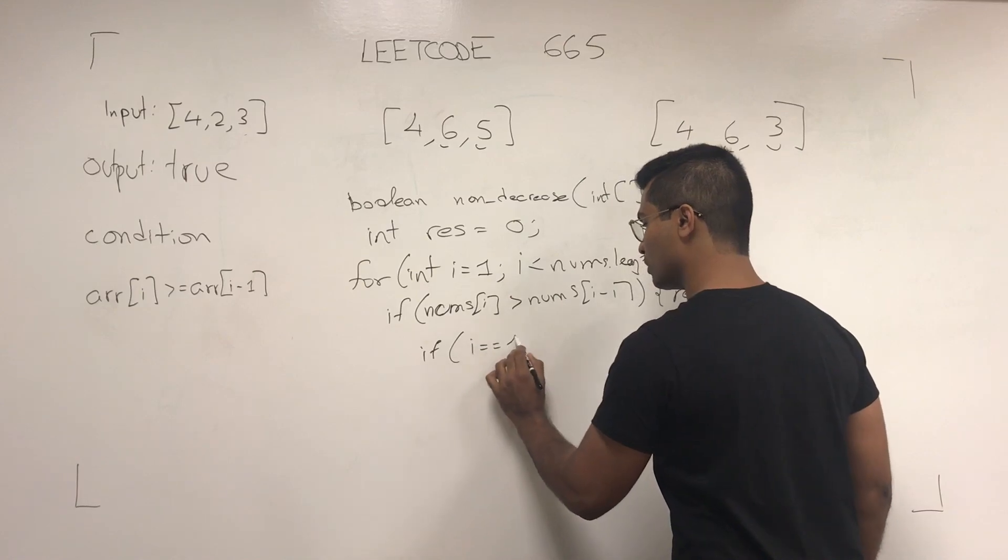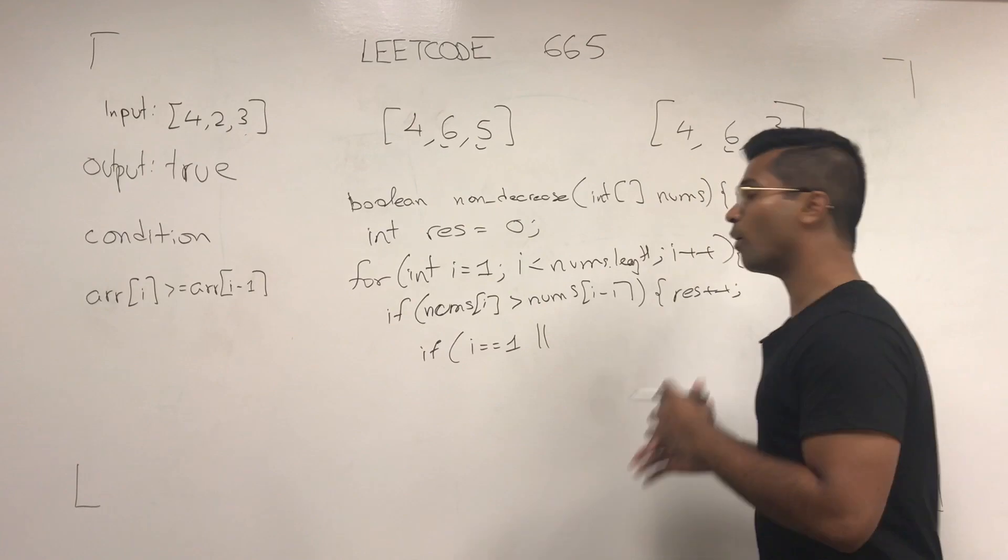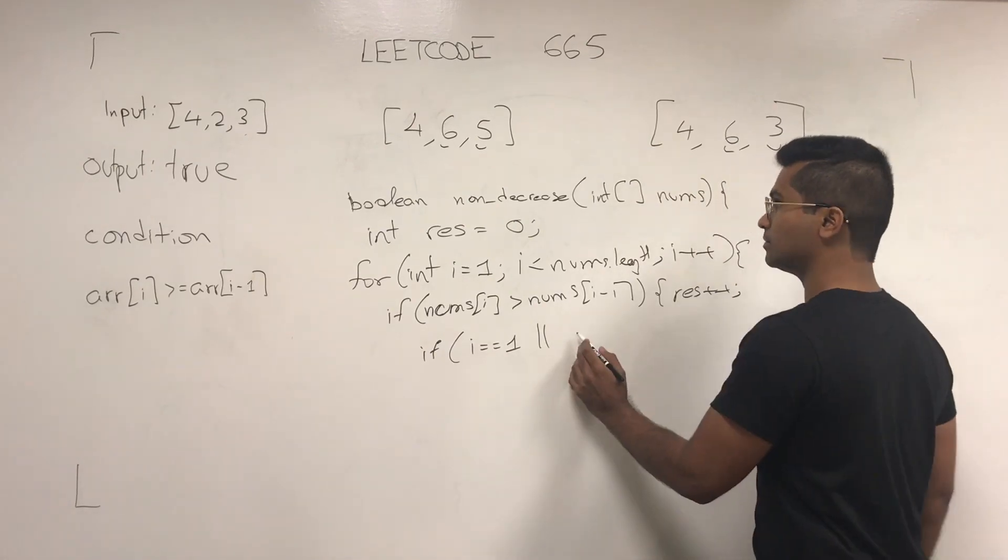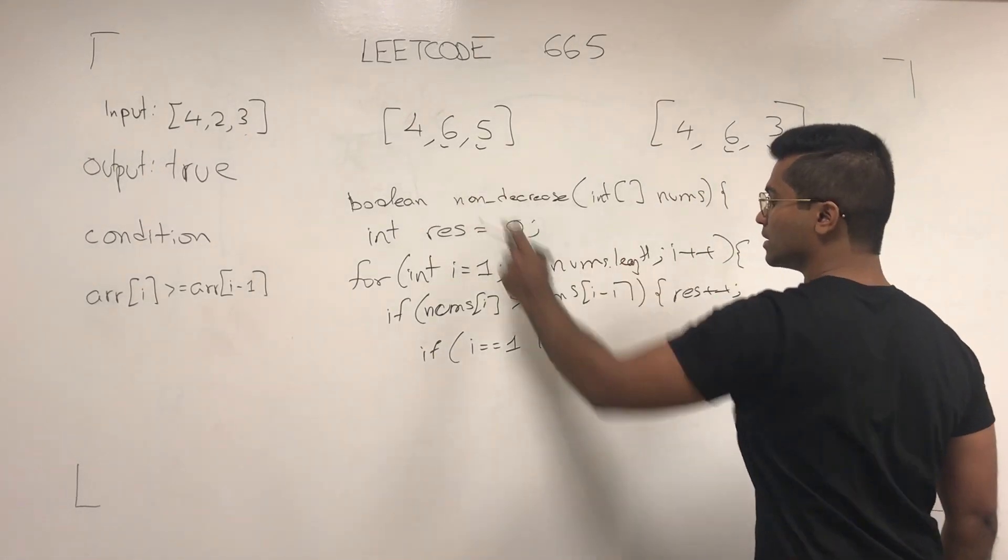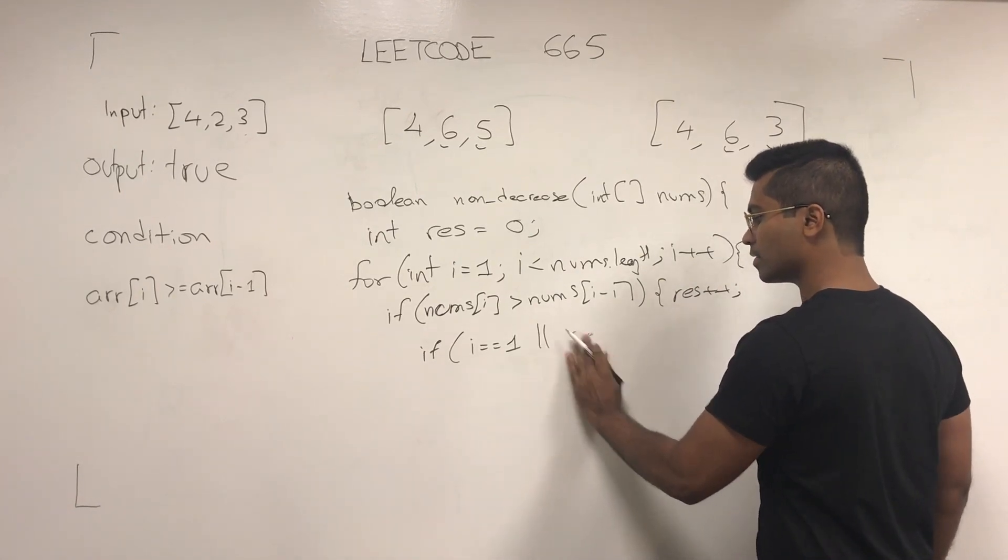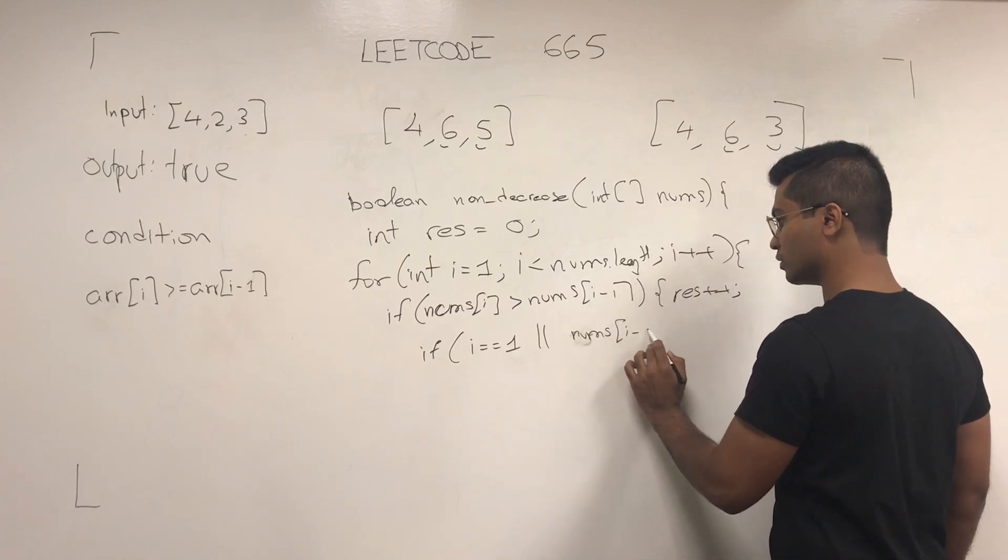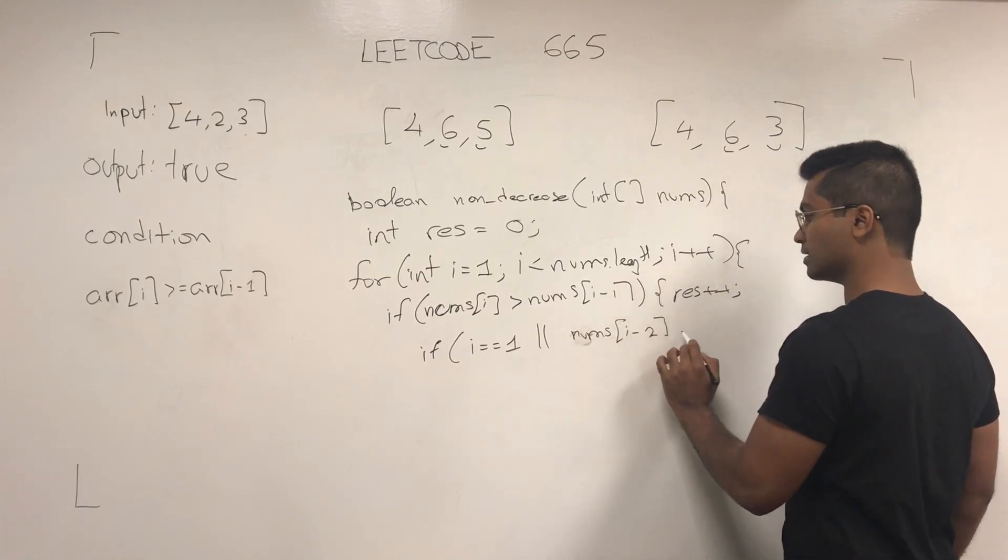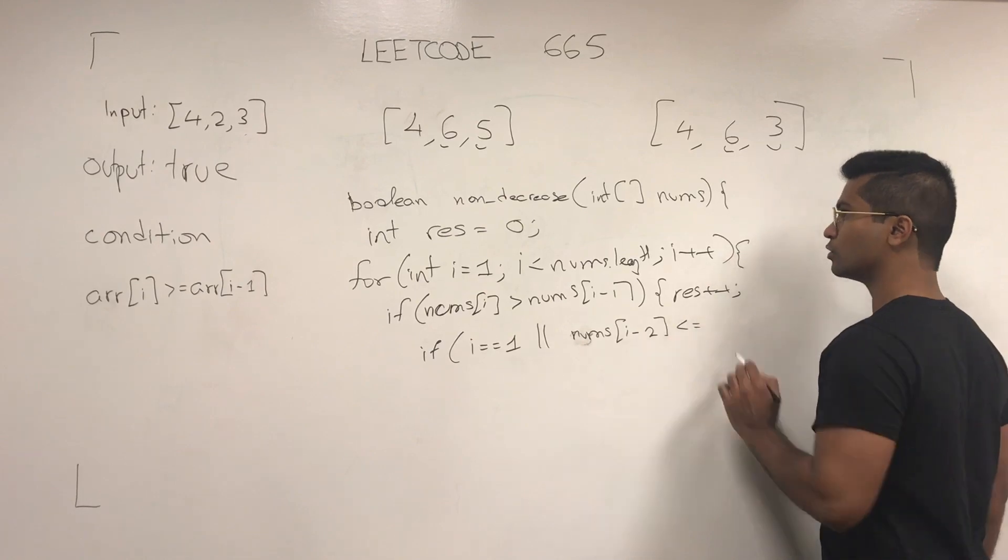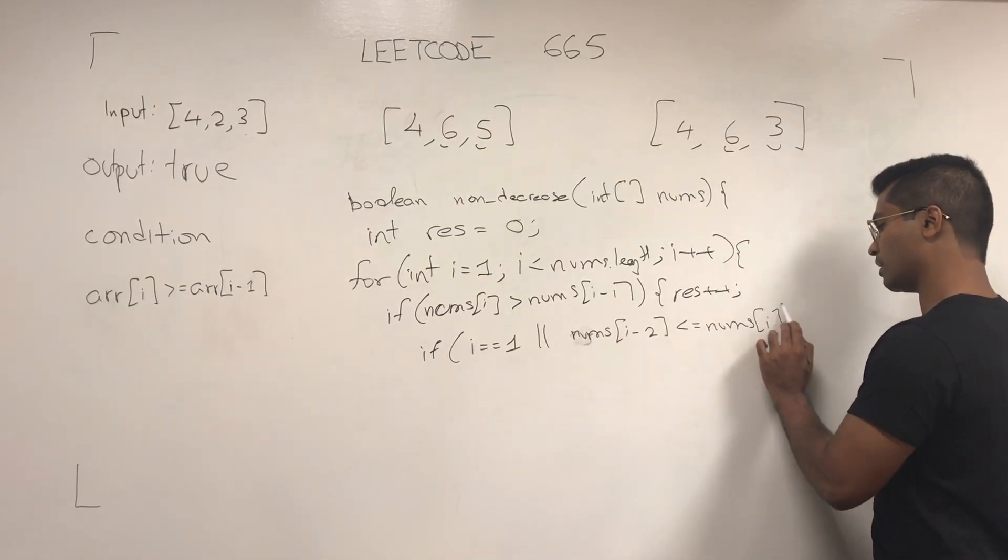If i is equal to 1, meaning if we're just starting this for loop, or if it's a situation like this where nums i-2 is less than or equal to nums of i,